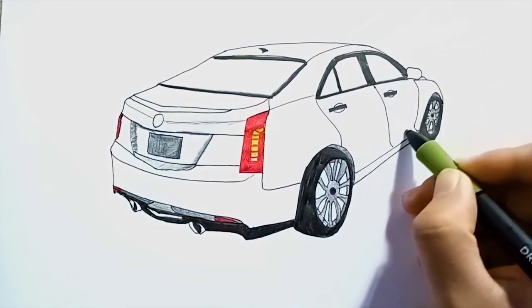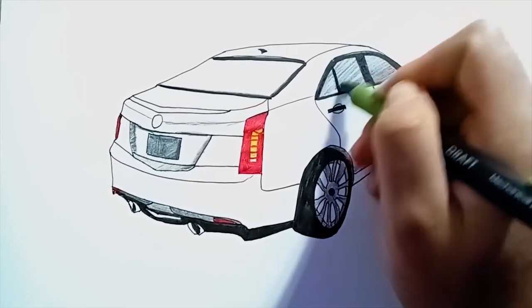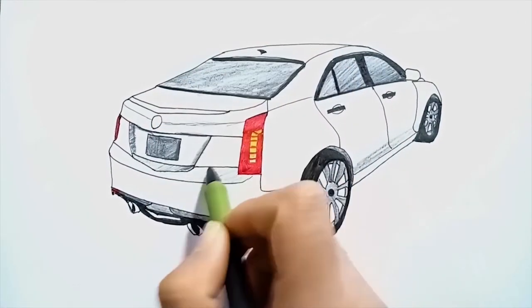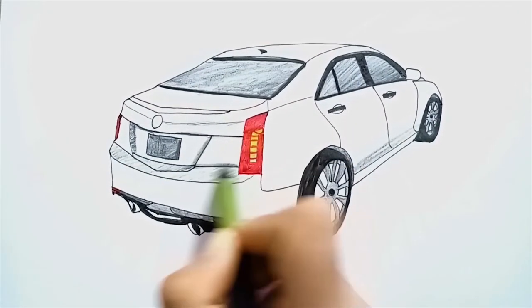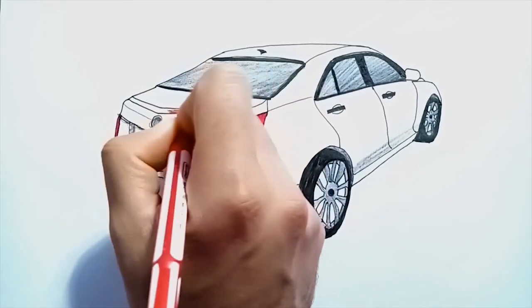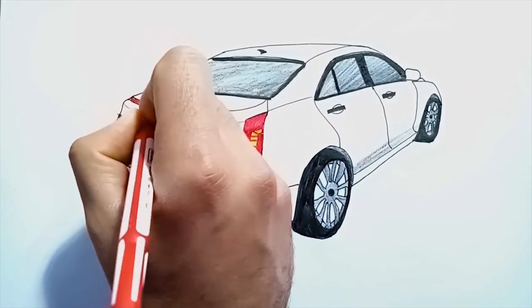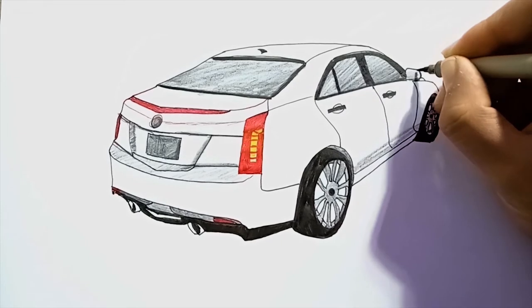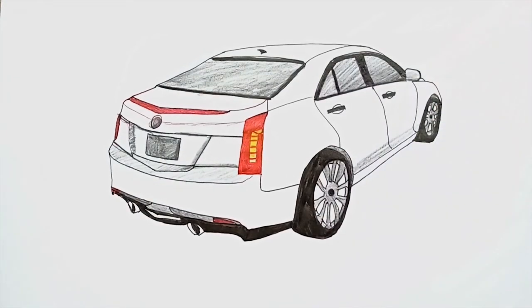The Cadillac ATS has a 109.3-inch, 2,775mm wheelbase. The wide front and rear tracks are the cornerstones of the ATS's firmly planted stance, which is enhanced by short overhangs and taut sheet metal that appears to wrap tightly around the tires.